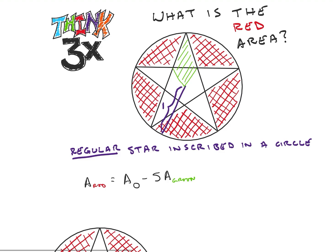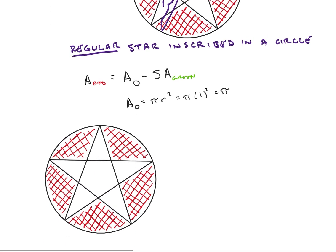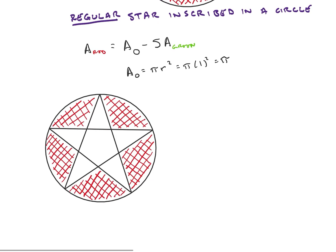We can already see, since we know the radius, that the area of the circle is going to be pi times the radius squared, which is pi times one squared, which is pi. So the area of our circle is going to be pi — we're doing pi minus whatever the area of the green is. So our real goal is to find the area of that green section.